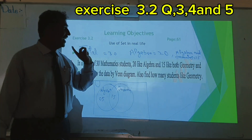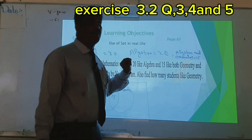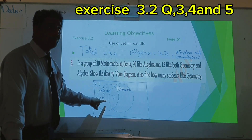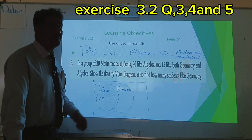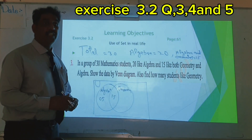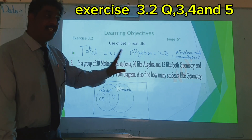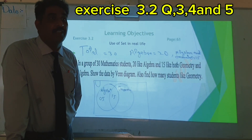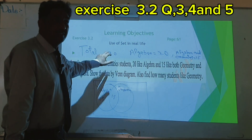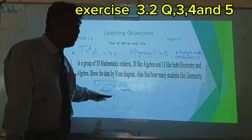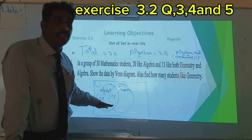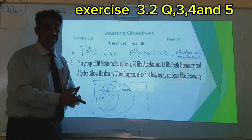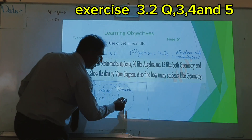Now, how many students like geometry? Total students who like both algebra and geometry is 15. Total is 30, and we have used 20 students so far, so 10 remaining — they are good in geometry.